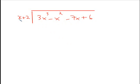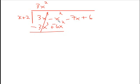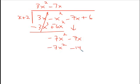Something times x is going to give you 3x cubed, so that's 3x squared. Multiply: 3x squared times x gives 3x cubed; 3x squared times 2 gives positive 6x squared. Change the signs — negative, negative. These cancel, and we end up with negative 7x squared. Bring down minus 7x. Repeat the process: something times x should give you negative 7x squared, so negative 7x. That gives negative 7x squared and minus 14x.